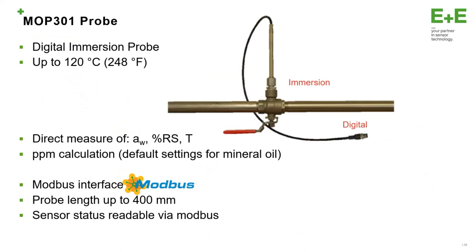The MOP 301 is a digital immersion probe because you can install the probe directly inside the transformer. The probe is compact and inside there is a digital interface. This probe works up to 120 degrees Celsius. We have direct measurement of water activity, relative saturation, and temperature. The digital interface is Modbus RTU with RS485 interface. We have two probe lengths: 200 millimeters and 400 millimeters, which allow placement at different positions in the transformer.